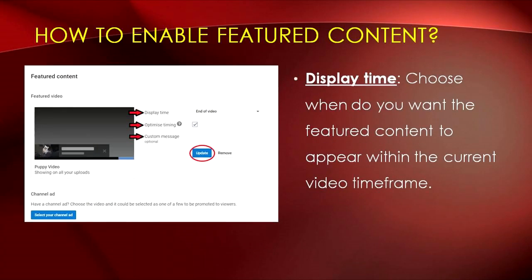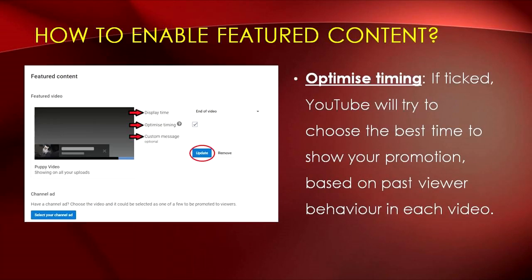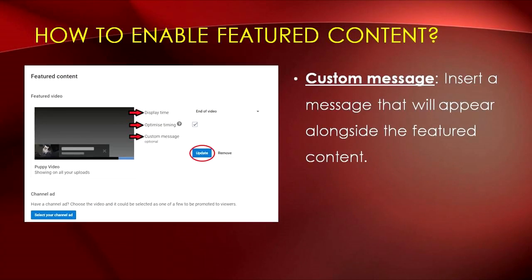You will then be looking at the customization screen for your selected featured content. There are three things you need to customize. First is Display Time — you can specify exactly when you want the featured content to appear within the current video time frame. For Optimized Timing, if you tick this box YouTube will try to choose the best time to show your promotion based on past viewer behavior in each video. Custom Message is where you can insert a message that will appear alongside the featured content. When you're done customizing, simply click the Update button and you're done.